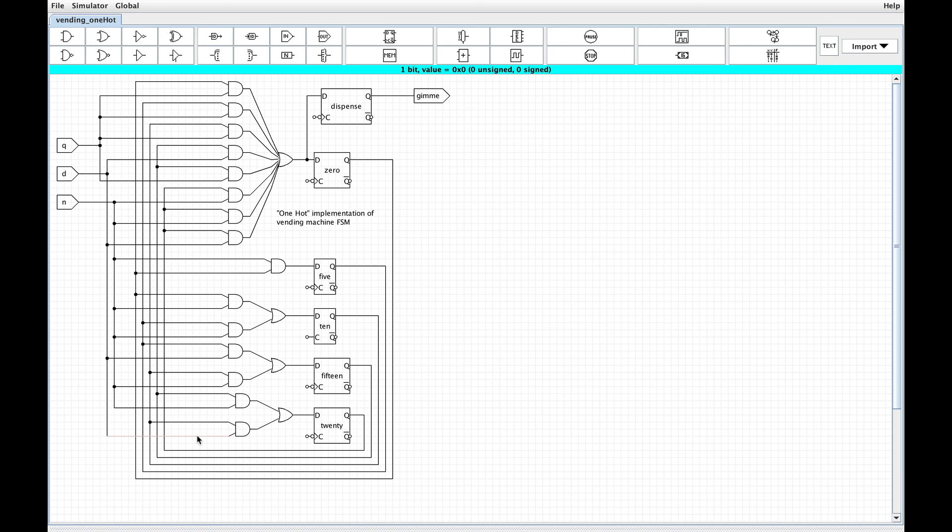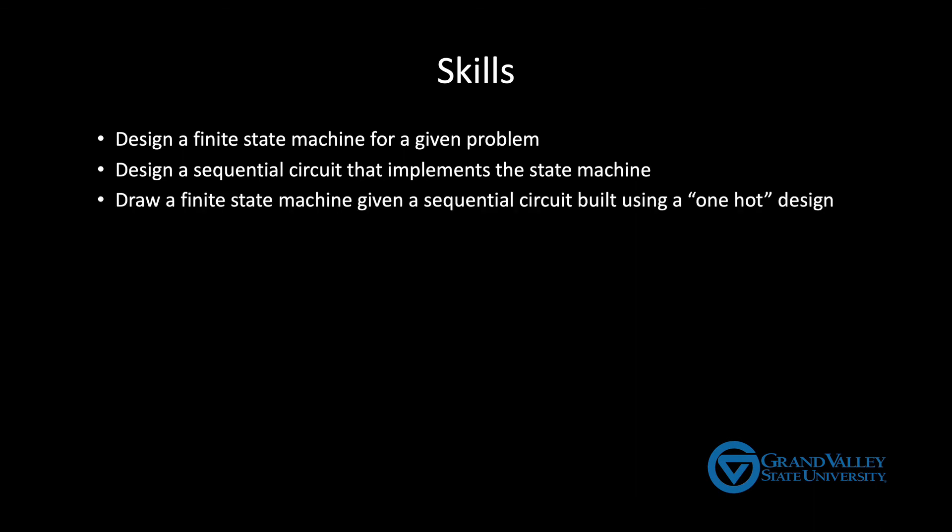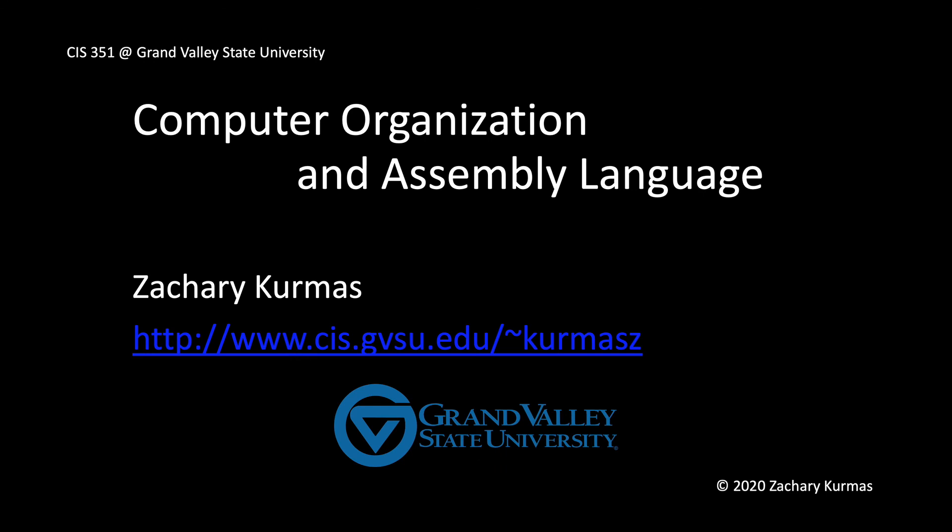Now one last caveat. The purpose of this video was to provide a high level understanding of finite state machines and how they can be implemented. Realize however that the real world is more complicated. There are entire engineering courses devoted to the details of designing embedded circuits, even simple ones like this vending machine. There are a lot of details that I left out because they're out of scope for this computer science course. However, even though we've only just scratched the surface, you should still be able to design a finite state machine to solve a given problem and then design a sequential circuit that implements that finite state machine. You should also be able to work backwards and generate a finite state machine from a complete one hot circuit. Now in the next video we'll begin designing a complete real CPU, like a real general purpose CPU that you might find in a desktop or a laptop or a phone.